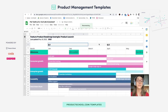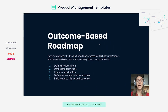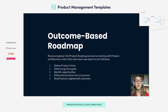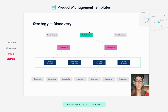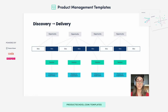Next we have the outcome-based roadmap, which is much more aligned with what modern product teams are doing. It's a reverse engineering of the future roadmap. Instead of starting with the features, you actually start with the product vision and work your way down into objectives and key results, and ultimately get to your feature or experiment. It's much more aligned with current product practices in that it is outcome and experiment based rather than feature based.